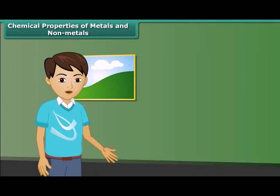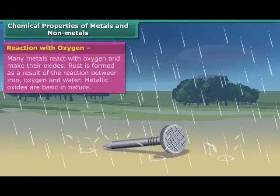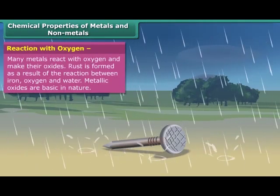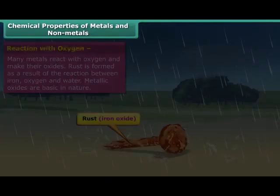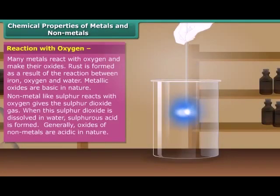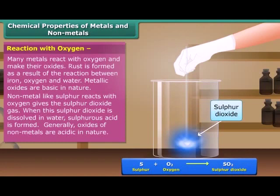Friends, after discussing the physical properties of metals and non-metals, let's know about their chemical properties. Metals like iron, copper, magnesium, etc. react with oxygen and make their oxides. These oxides are basic in nature. Sulfur reacts with oxygen, giving sulfur dioxide gas. Oxides of non-metals are acidic in nature.